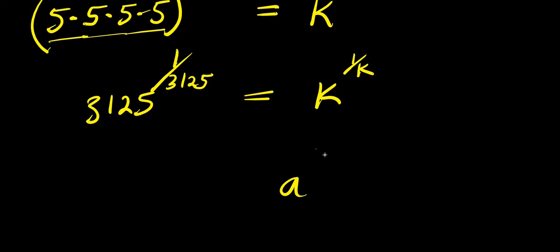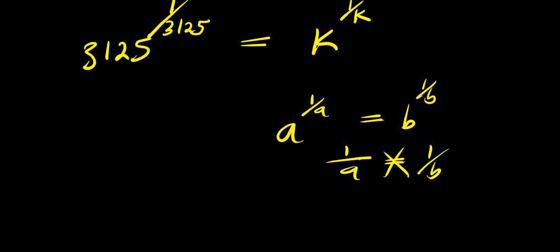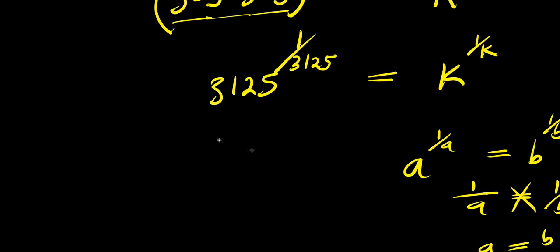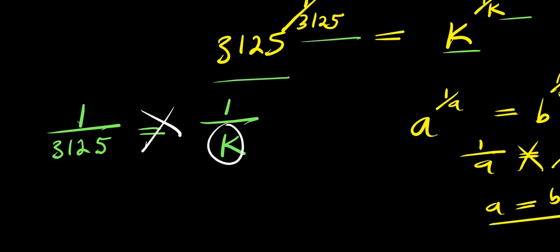Now if you have a to the power of 1 over a equals b to the power of 1 over b, that means 1 over a equals 1 over b. If you cross multiply, a times 1 gives you a equals b times 1 gives you b. So doing the same thing here, you can have 1 over 3125 equals 1 over k. And if you cross multiply, you have k times 1, that means k equals 3125.